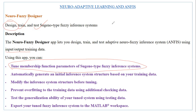We can guard against overfitting the training data set by using additional checking data to prevent overfitting. When the model is subjected to overfitting, chances are it is going to be less accurate. We can also test the generalization capability of our fuzzy inference system using a testing data set, and finally export our tuned fuzzy inference system into the MATLAB workspace.